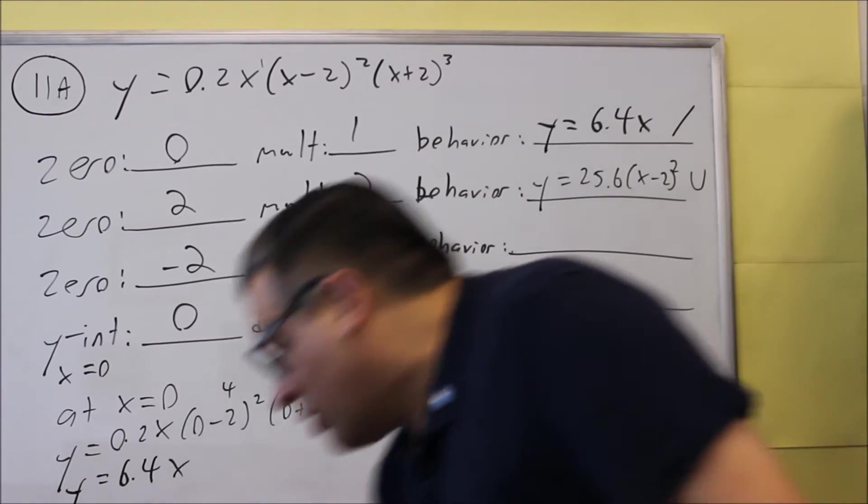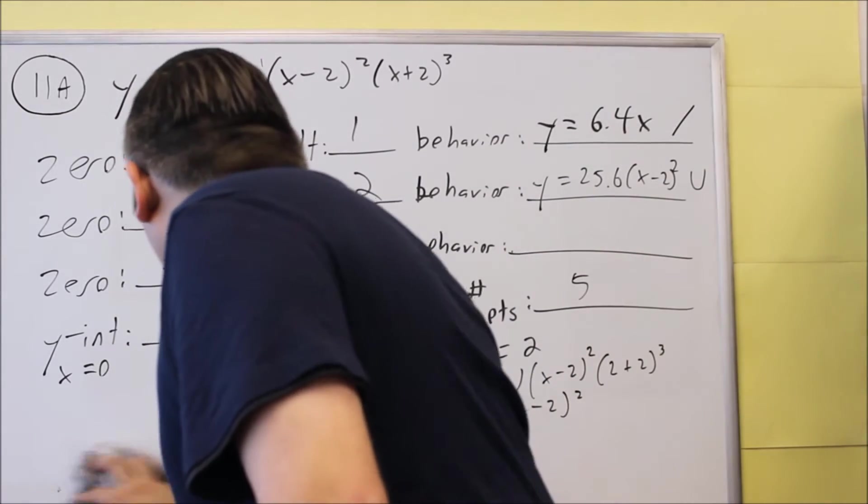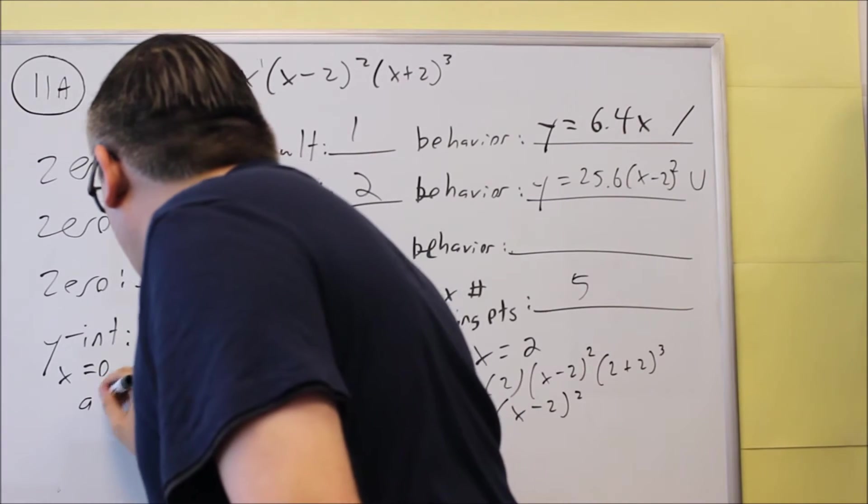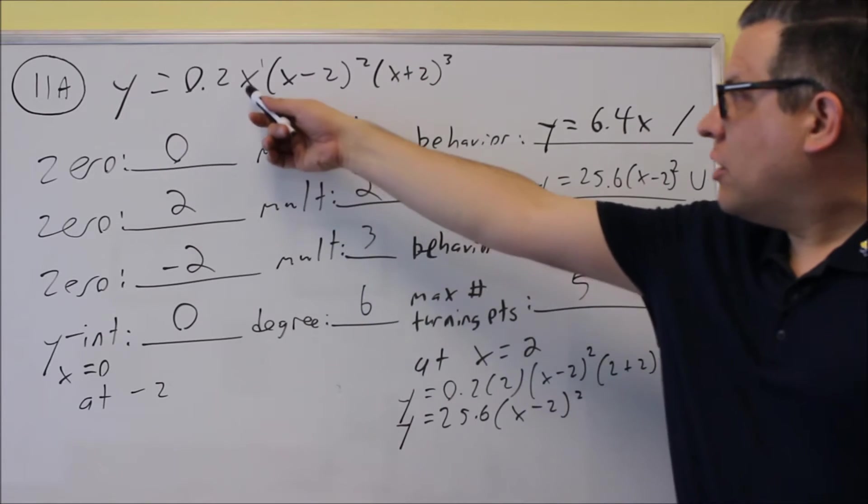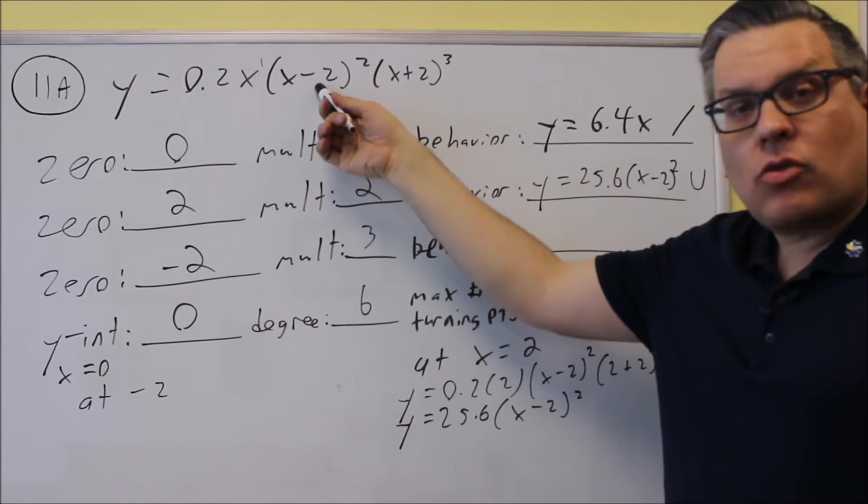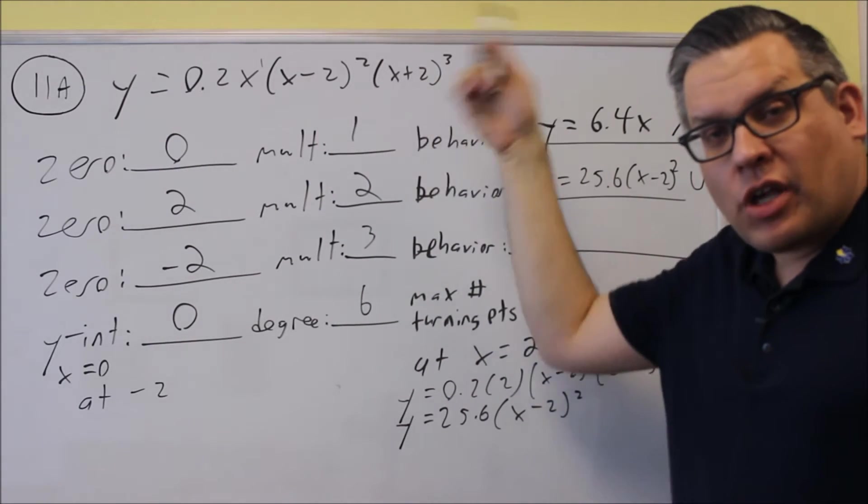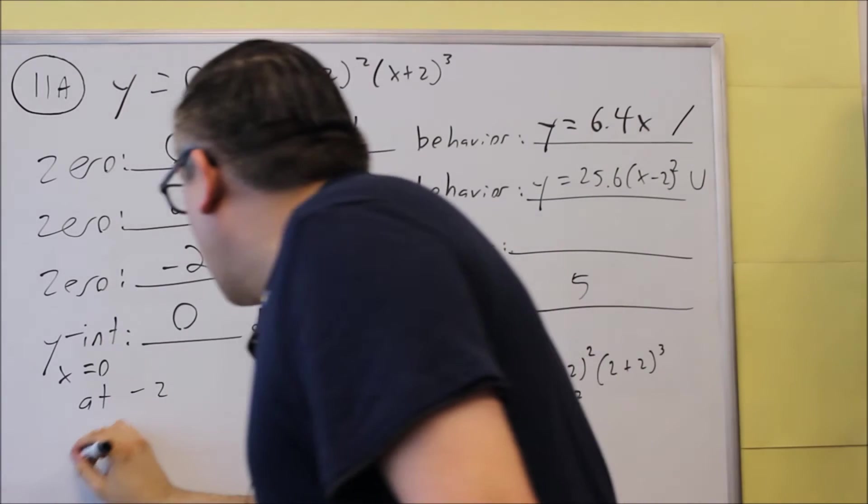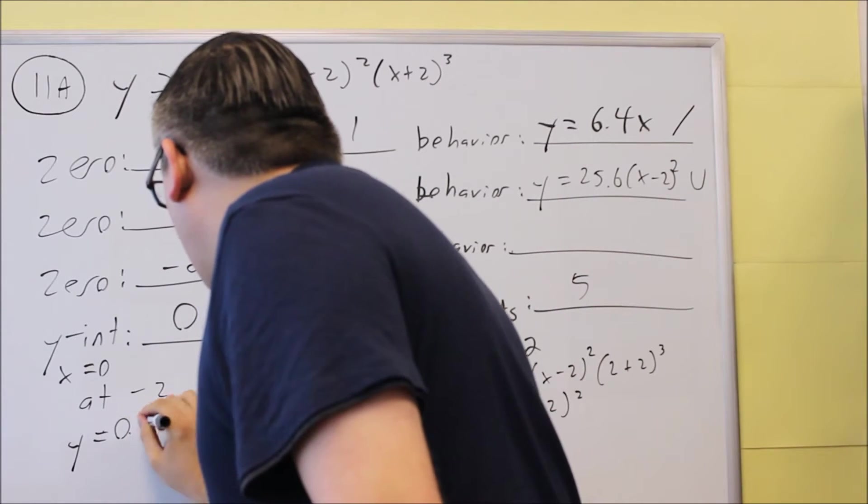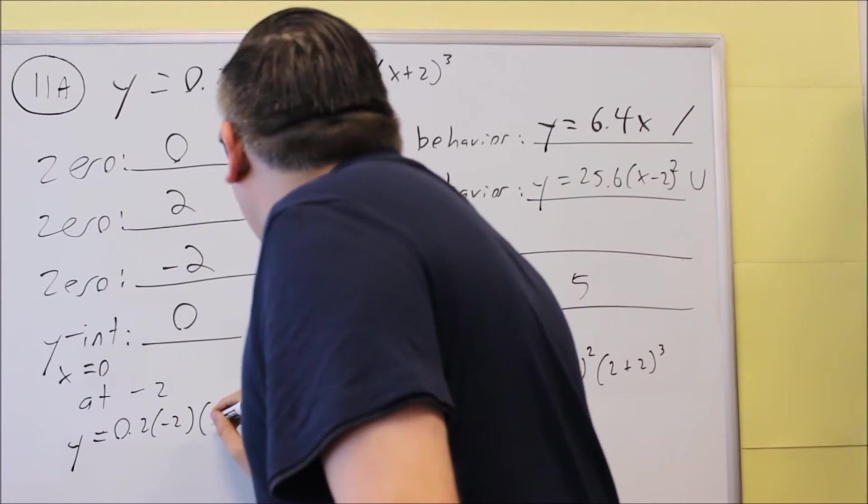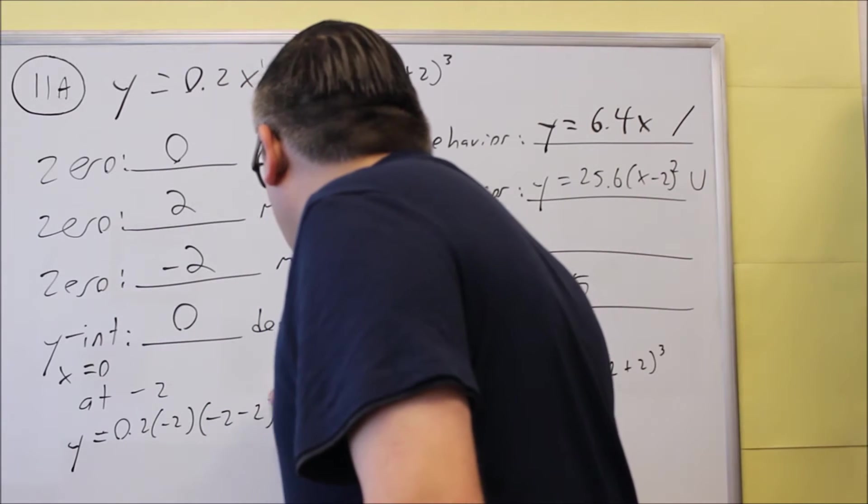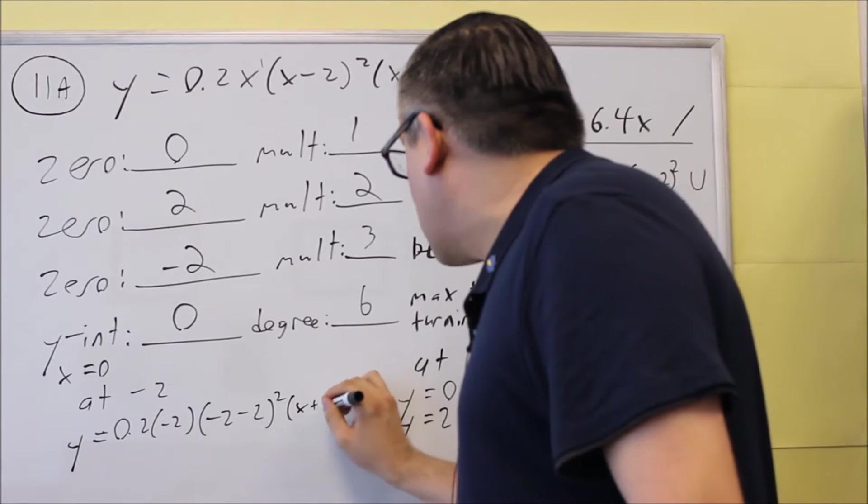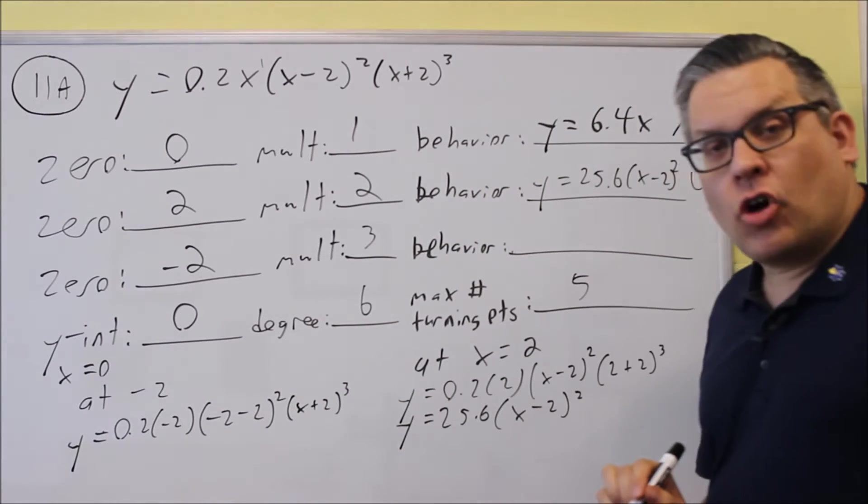Now we have one more behavior to find. And that's going to be the behavior at negative 2. So for negative 2, I'm going to put that in the first and second one, but not the last one, because otherwise it would cancel out and I would get a zero. So I'm going to do 0.2 times negative 2, and then I'm going to do negative 2 minus 2 squared, and then I have the last one left over.